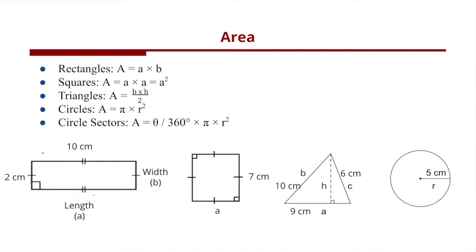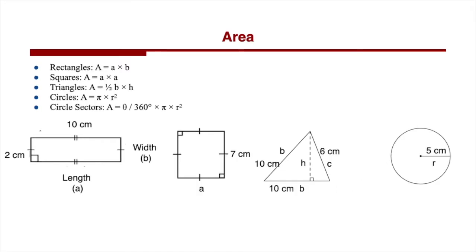The area formula of a circle sector is theta — the degree of the circle sector — divided by 360 degrees, multiplied by pi times the radius squared. Now that we have a better understanding of the area of basic geometric shapes, please pause the video and find the area of the following shapes.